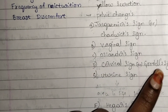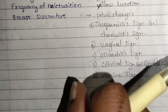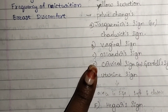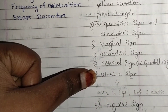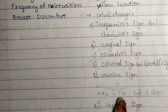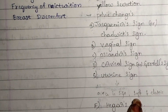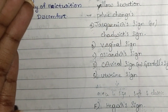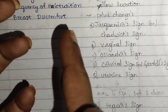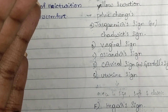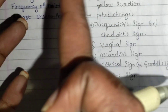Next is the cervical sign or Goodell sign, which is softening of the cervix, also seen around the sixth week. The uterine signs include an increase in size, softening, and elasticity. The uterus keeps on increasing in size month after month, becomes softer, and its elasticity allows it to expand every month.